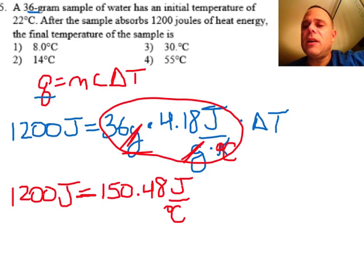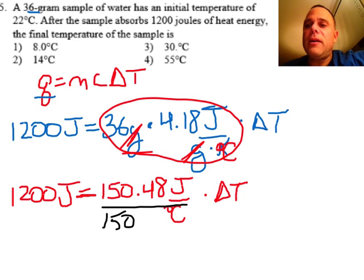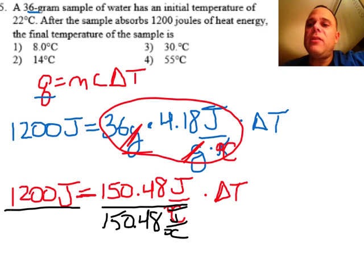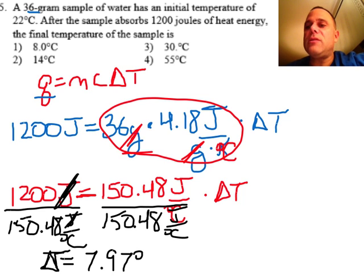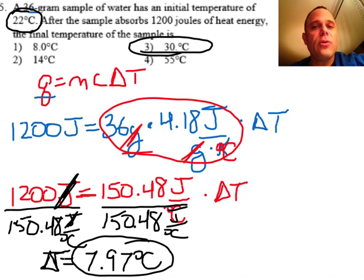So I could combine these. When I do that, I get 1200 joules equals 150.48 joules per degree Celsius times delta T. I would divide both sides by 150.48 joules per degree Celsius to isolate the delta T. Our units cancel out and I could tell you from the math I did previously, my delta T is equal to 7.97 degrees Celsius. As I said earlier, the temperature will climb, so it began as 22 degrees Celsius, it climbed roughly 8, giving us a final temperature of 30 degrees Celsius.